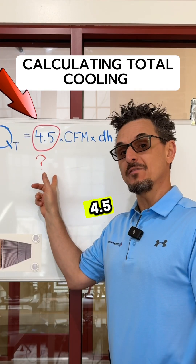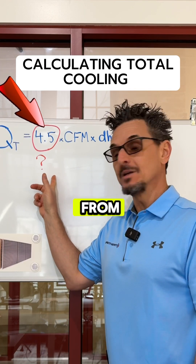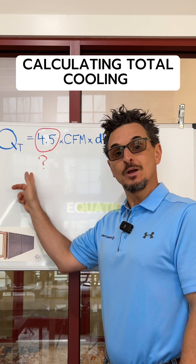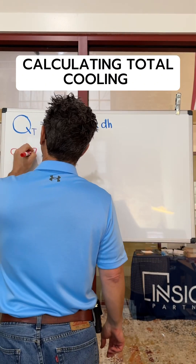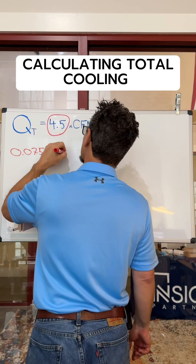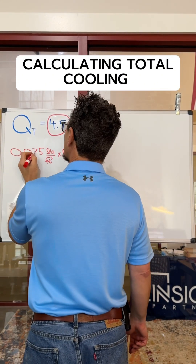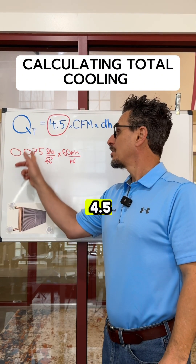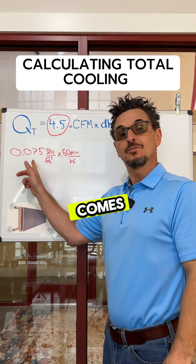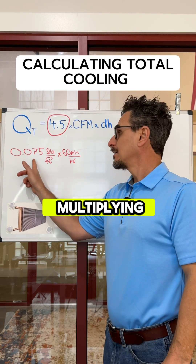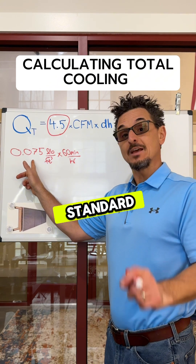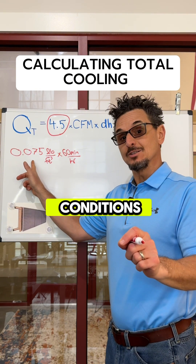Do you know where the 4.5 comes from in the total cooling equation? The 4.5 comes from multiplying the density of air at standard air conditions.